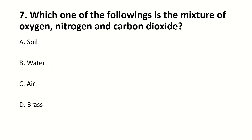Which one of the following is a mixture of oxygen, nitrogen and carbon dioxide? The right answer is C: air. Because in air there is oxygen, nitrogen, and carbon dioxide. So the answer here is air.